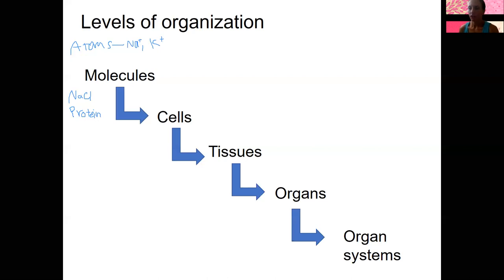A single organ can't do everything on its own — for example, the heart pumps blood, but it's not going to matter for the organism unless it also has blood vessels. So the heart along with the blood vessels form the cardiovascular or circulatory system.